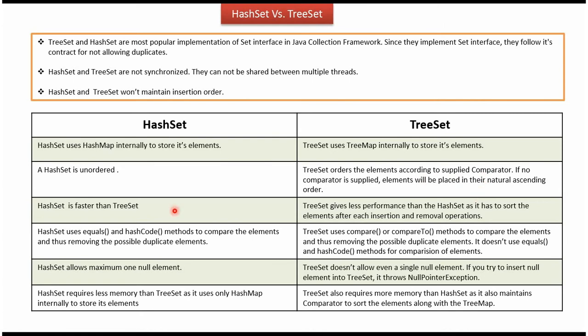HashSet is faster than TreeSet. TreeSet is slower than HashSet because when we add a new element to the TreeSet or remove an element from the TreeSet, it has to sort its elements. So performance-wise, TreeSet is lesser than HashSet.